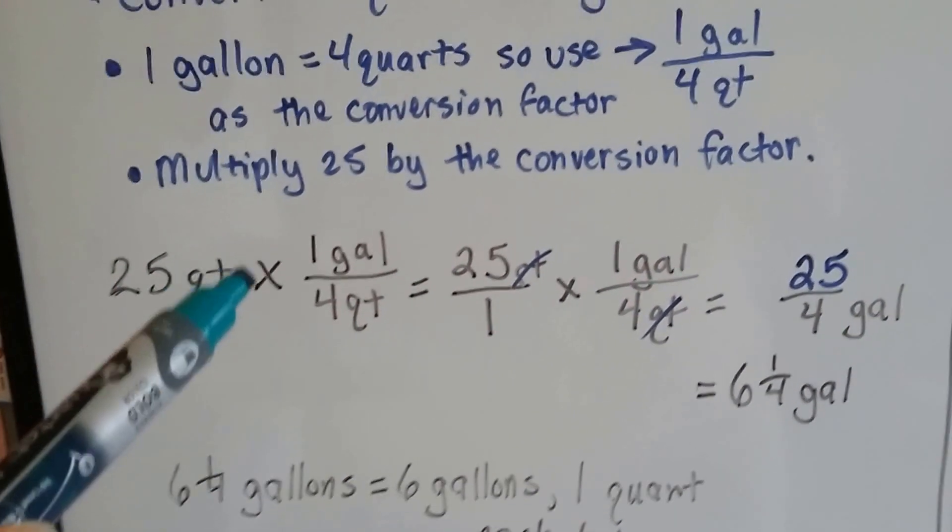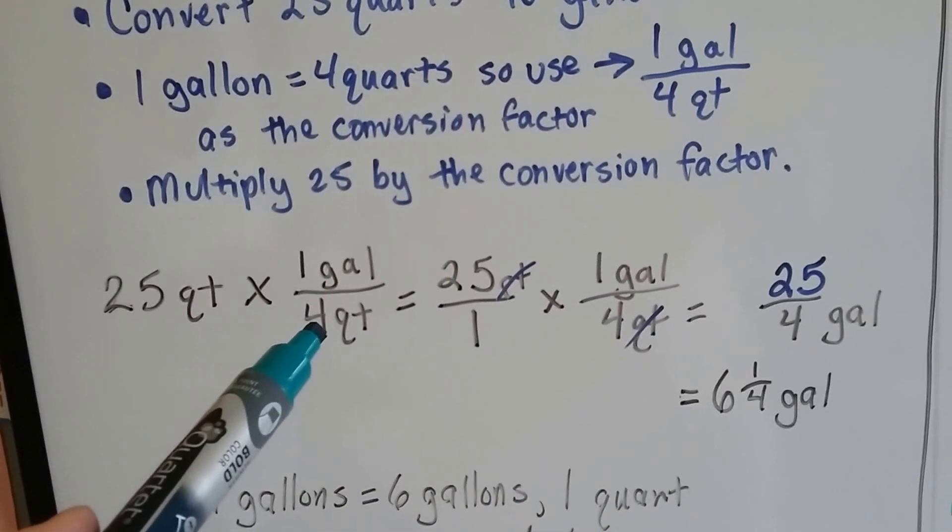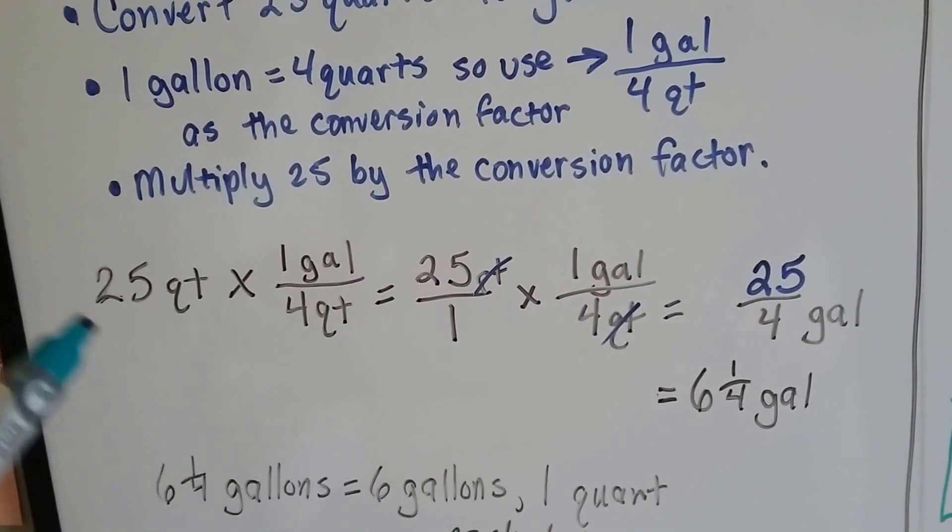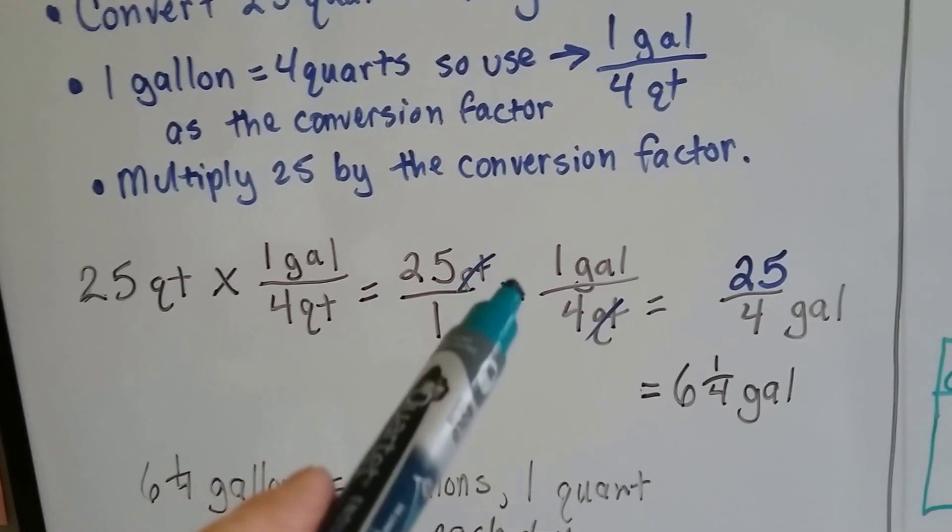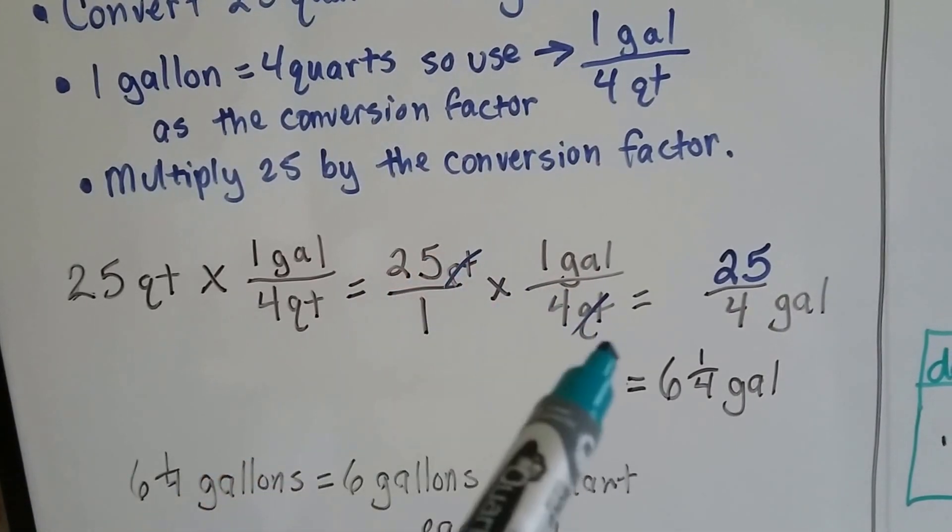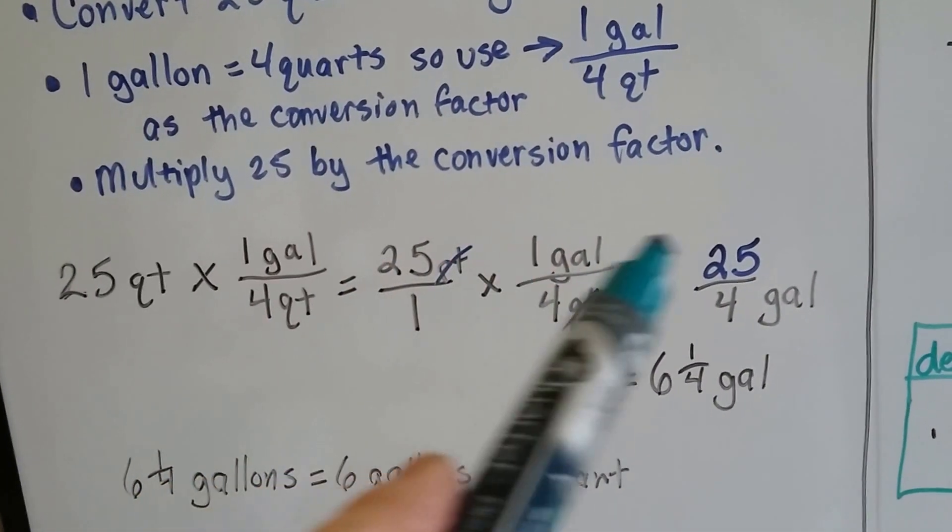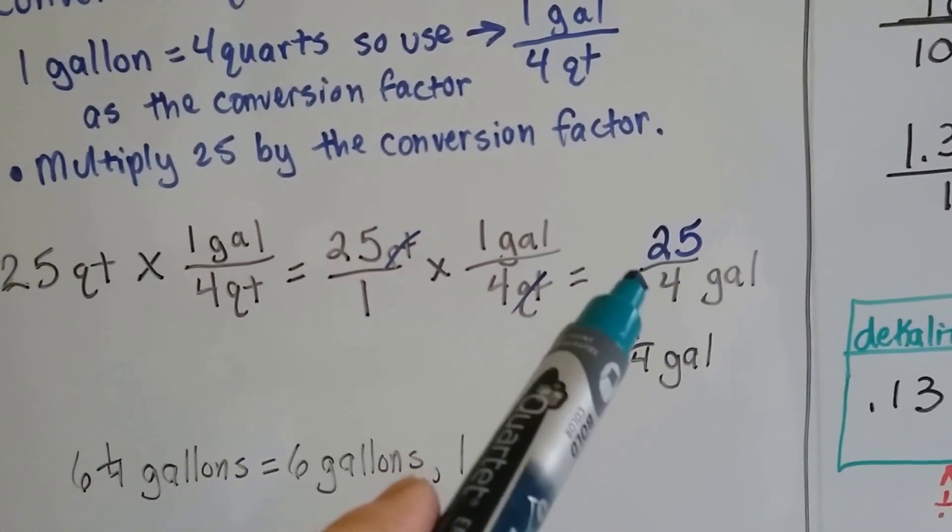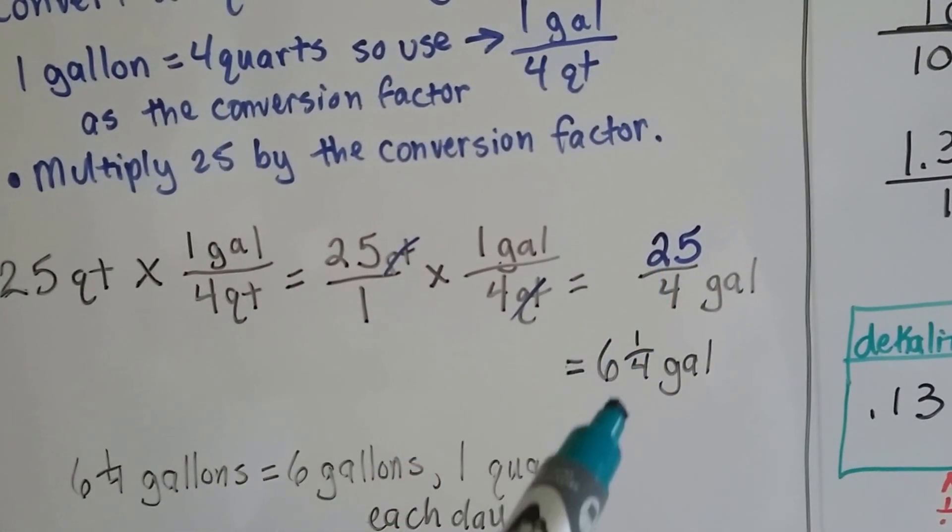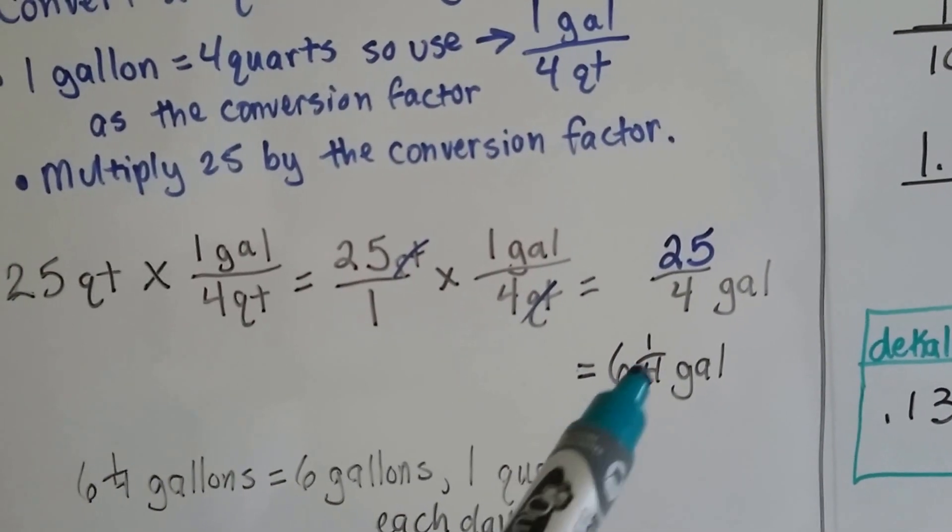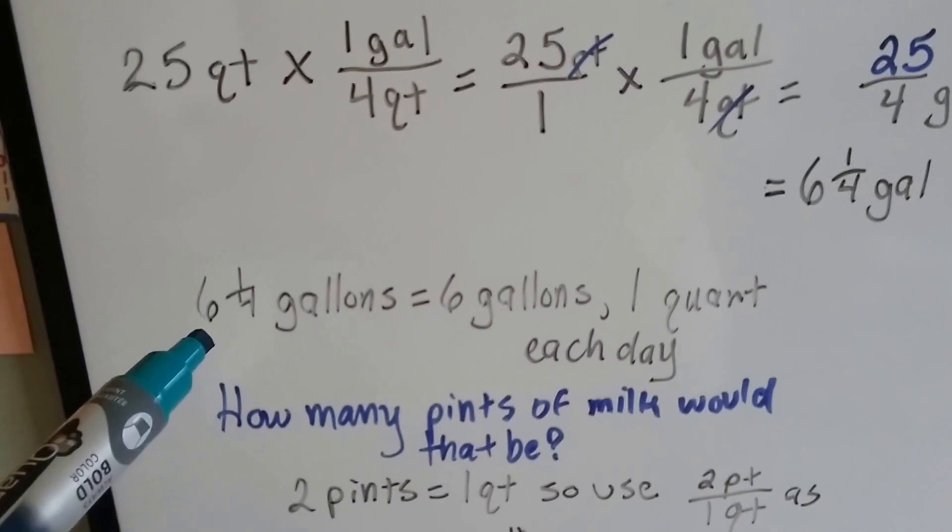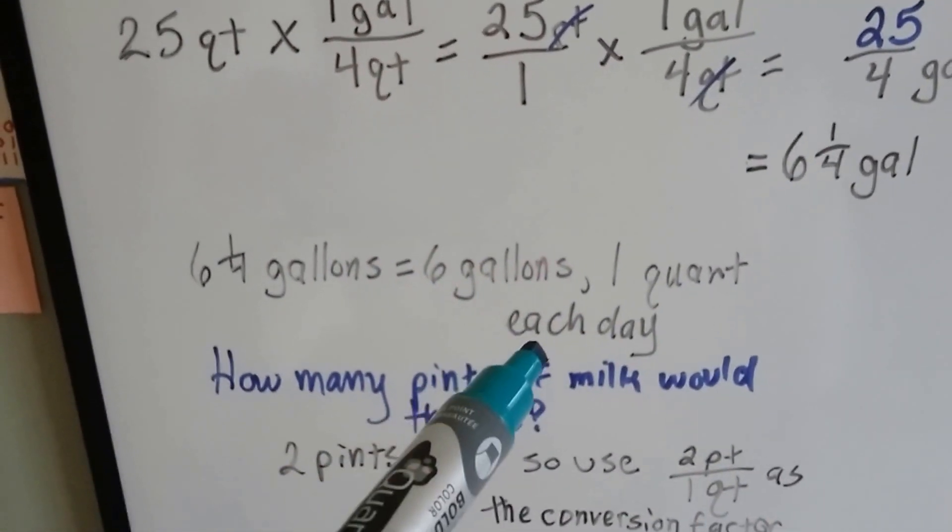25 quarts times the conversion factor 1 gallon over 4 quarts equals 25 quarts over 1 (we turned it into a fraction) times the conversion factor. The quarts cancel each other out. 25 times 1 is 25, 1 times 4 is 4. Now we just need to simplify this. 4 goes into 25... 4 times 6 is 24, with 1 left over. That makes 6 and 1 fourth gallons, so that's 6 gallons and 1 quart each day.